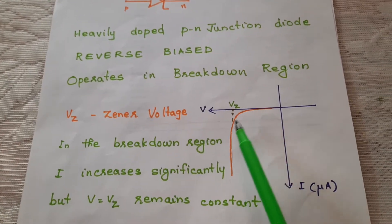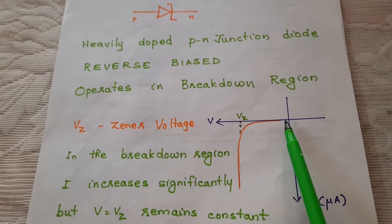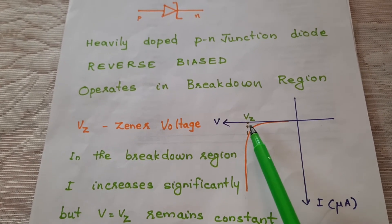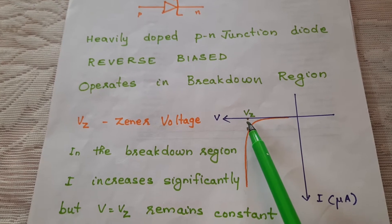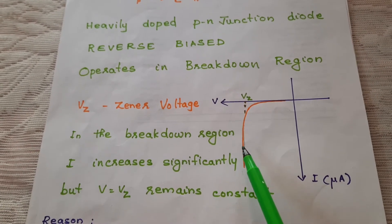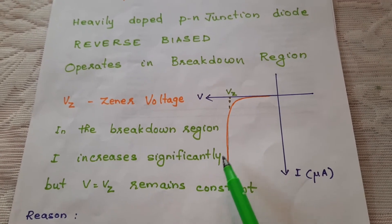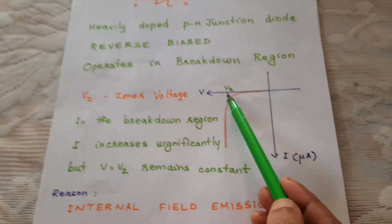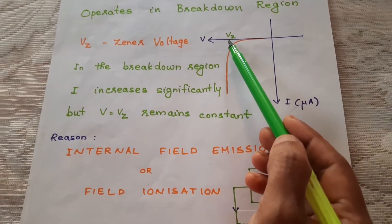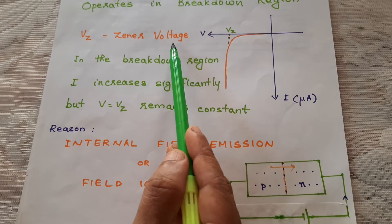Its characteristic is shown here. When the reverse voltage is increased to the breakdown voltage, the current increases significantly. But the voltage remains constant. And this voltage is known as Zener voltage.